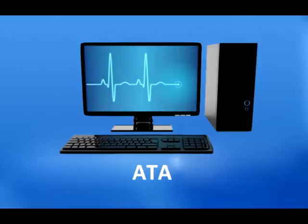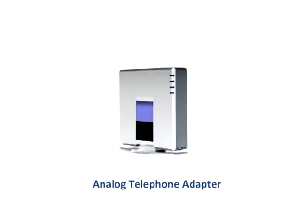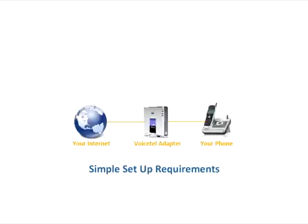ATA, which is the simplest and most common way, is through the use of a device called an analog telephone adapter. The ATA allows you to connect a standard phone to your computer or your Internet connection for use with Voice over IP. The ATA is an analog to digital converter — it takes the analog signal from your traditional phone and converts it into digital data for transmission over the Internet.